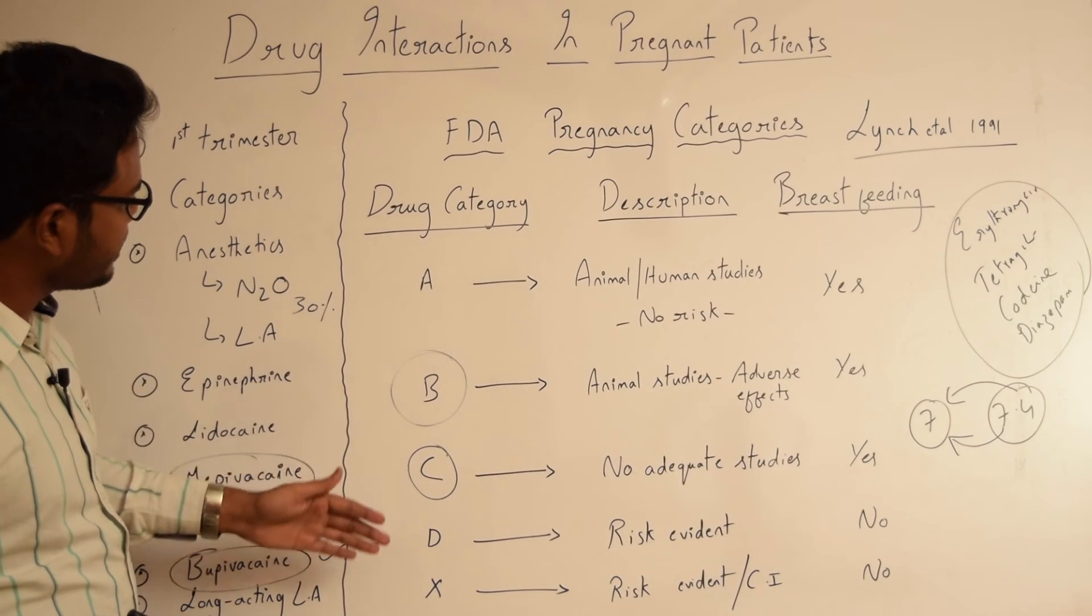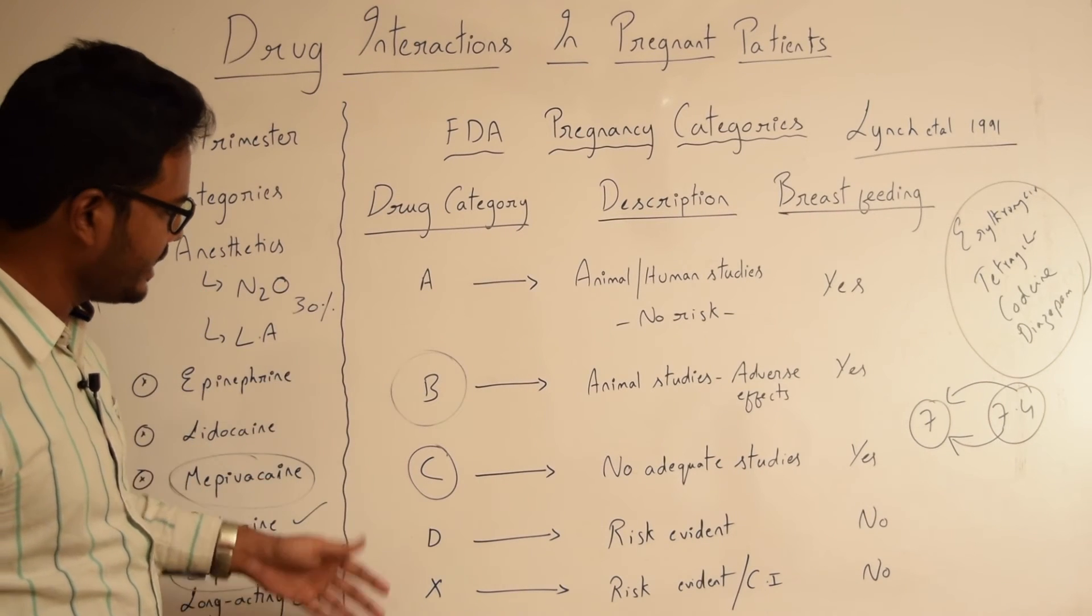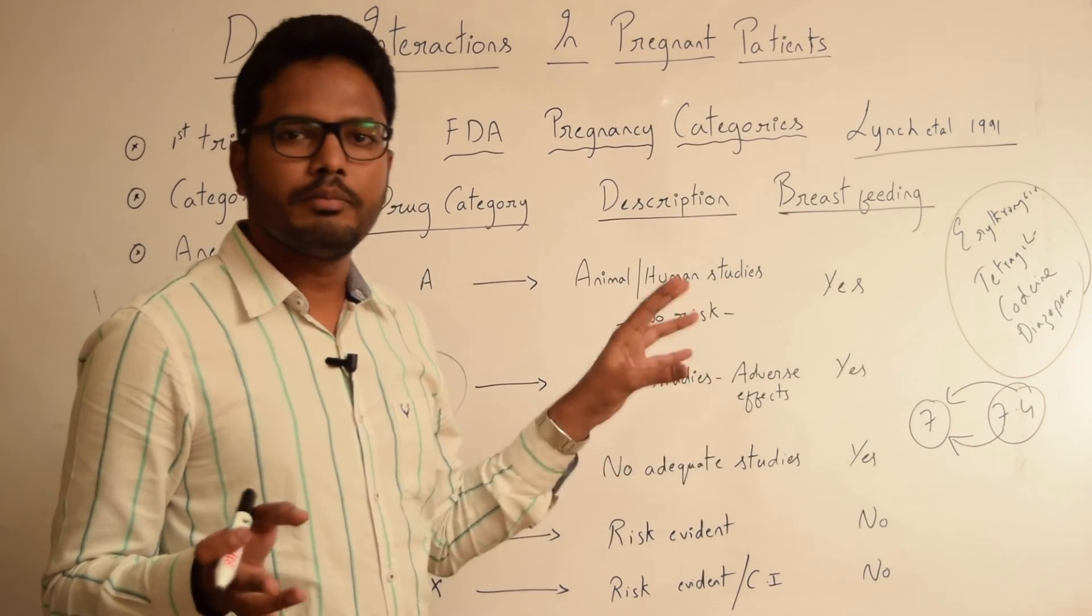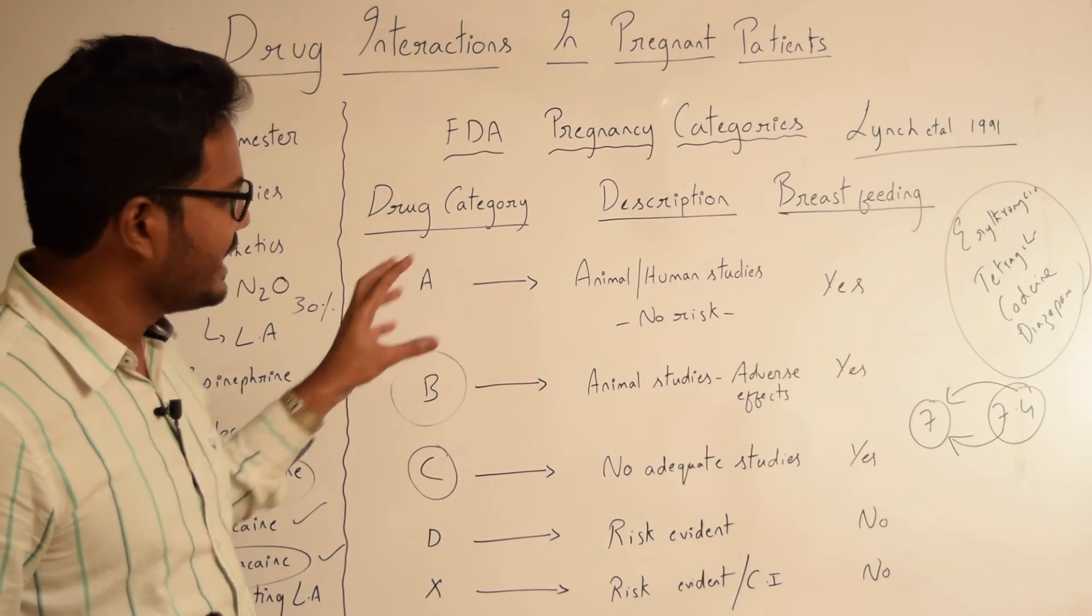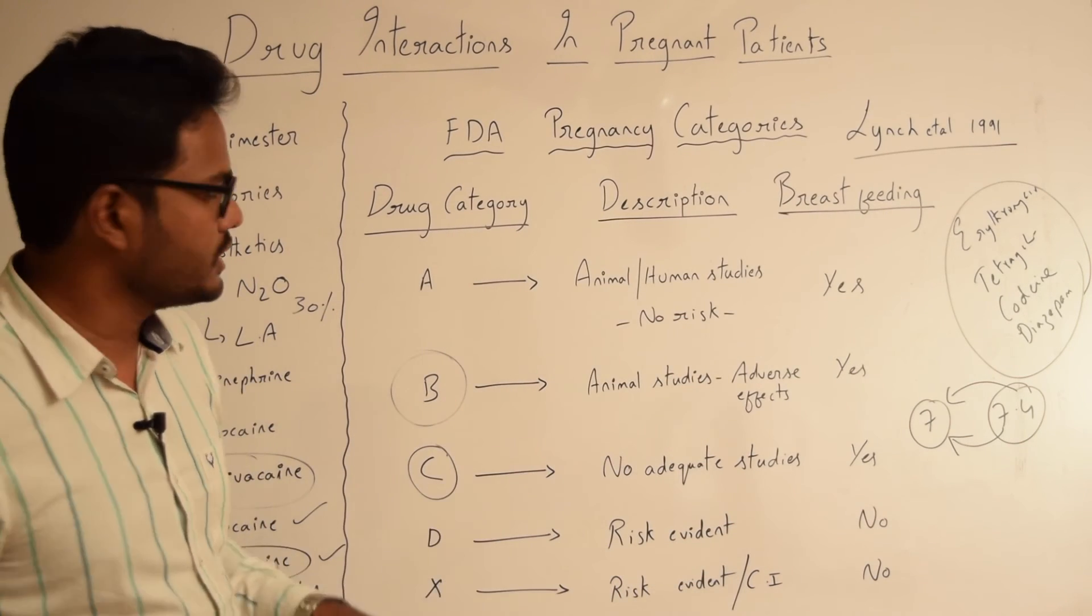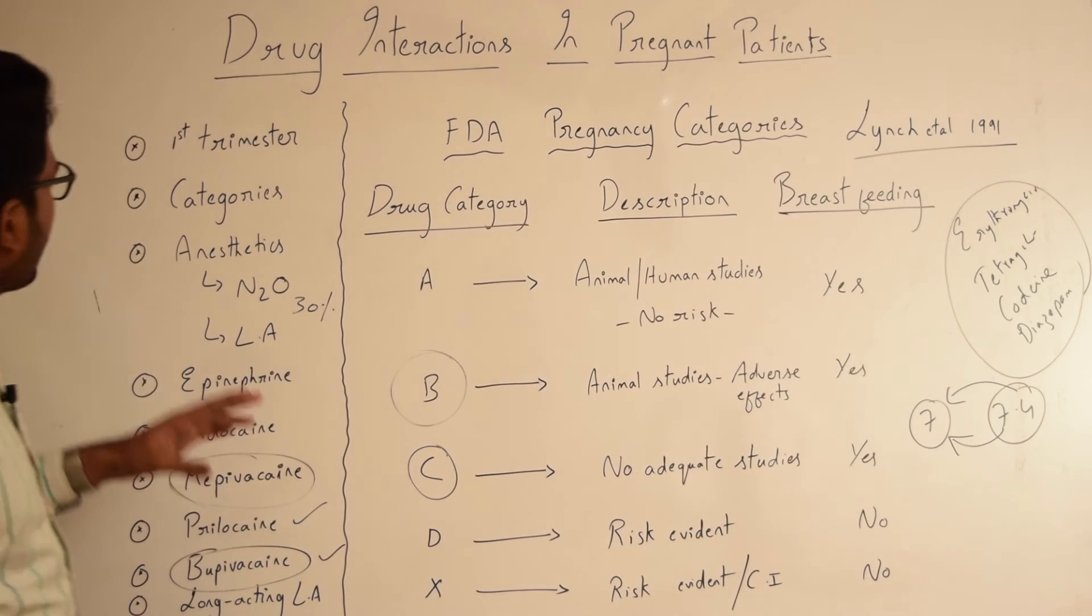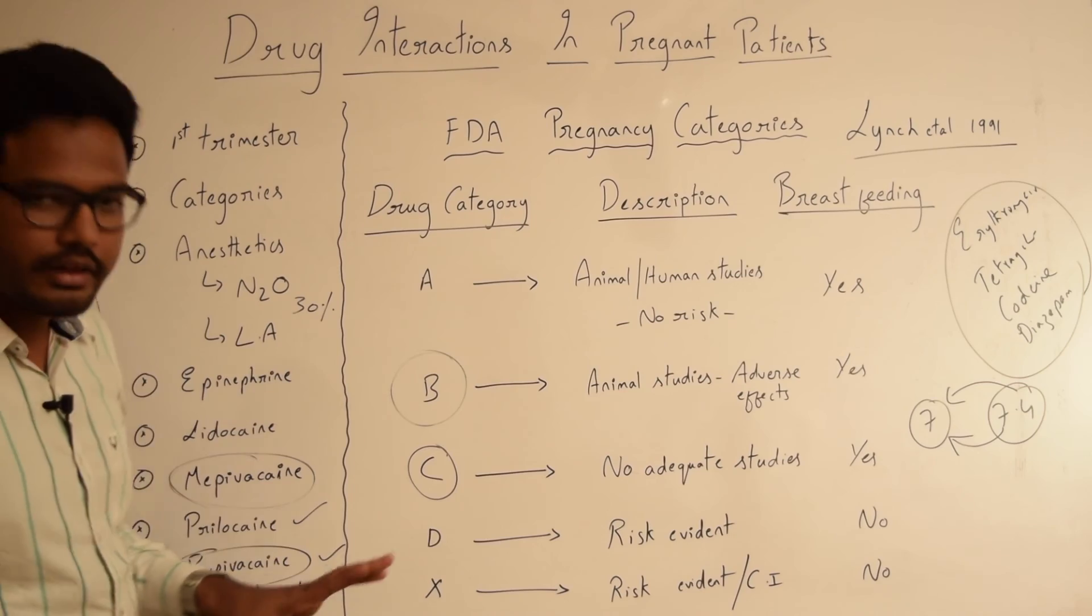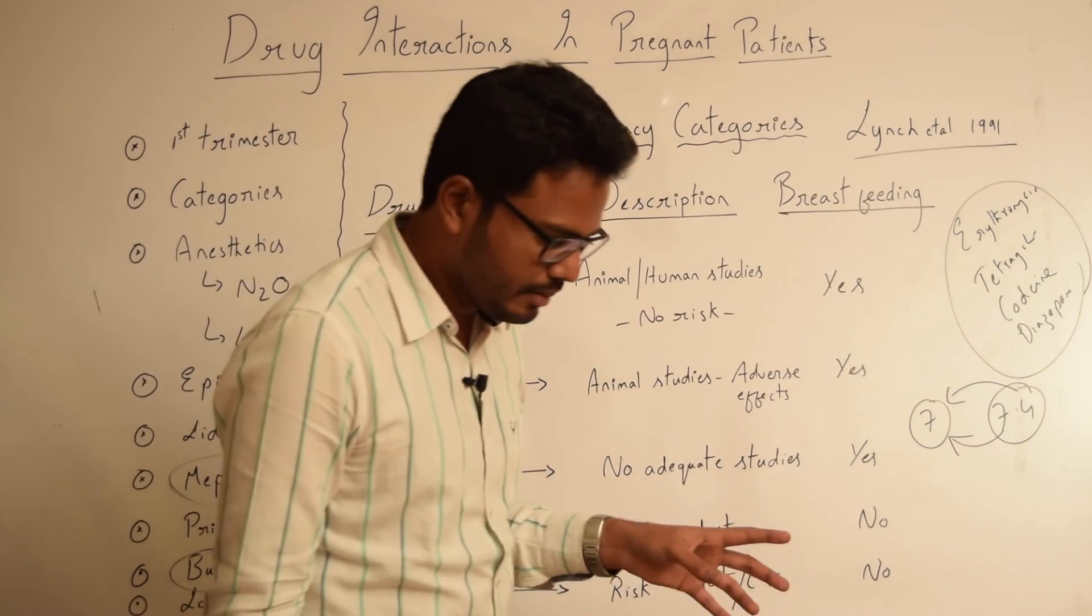We have 5 categories A, B, C, D and X. And depending upon the drug to the category it belongs to, we assess its risk potential. And accordingly, we should prescribe drugs to the patient, pregnant patient.